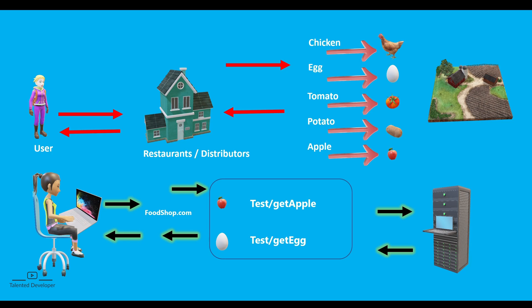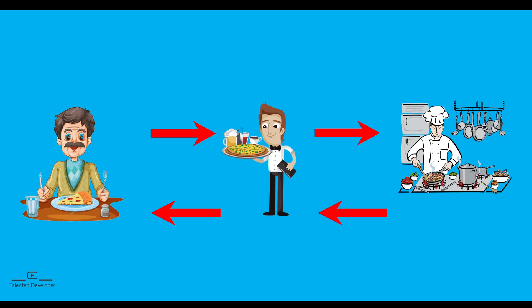Take another example: you go to a restaurant and want to eat something. You get the waiter and say 'I need this item.' The waiter goes to the chef, the chef prepares the dish, and the waiter delivers the dish to the customer. Here the waiter is acting like an API — he gets the request, goes to the chef, gets the final item, and delivers it. That's how the process works.